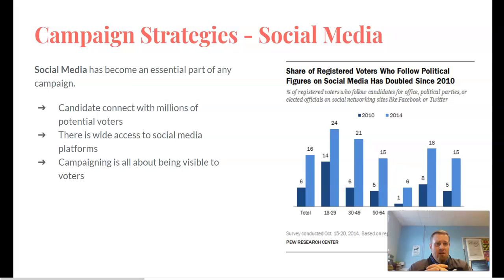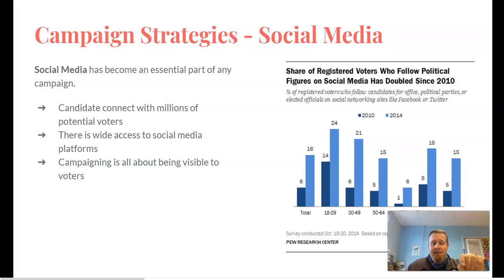J.B. Pritzker, our current governor, also utilized some of the same types of strategies when it came to social media. That allows you to do things like micro-target. If you've ever been on social media and gotten a random political ad on your account, that's because an algorithm, based on how you search and the stuff you do online, is keeping track of your data. That's why you see political ads, which will be ramping up, in your social media feeds.